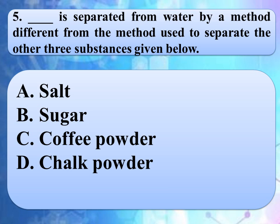The next question asks which is different from the matter used to separate the other three substances. Read the options very carefully and give your answer in the comment box. The correct answer is option D, chalk powder. Chalk powder is insoluble in water, while salt, sugar and coffee powder are soluble in water. Thus chalk powder is separated by sedimentation and decantation or filtration, while the other three are separated by evaporation.